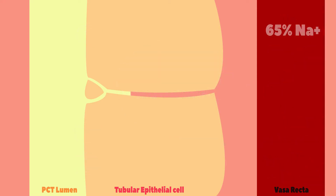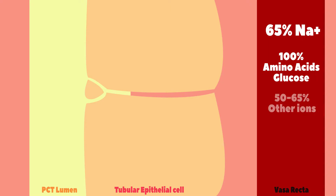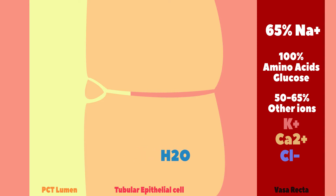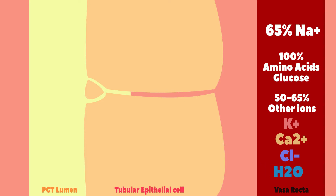In addition to the 65% of sodium and 100% of glucose and amino acids that are reabsorbed here in the proximal tubule, approximately 50% to 65% of other ions, such as potassium, calcium, and chloride, diffuse through and in between cells, ultimately being reabsorbed back into the blood. Importantly, water follows all the solutes, diffusing through and in between the cells, and therefore being reabsorbed back into the blood as well.